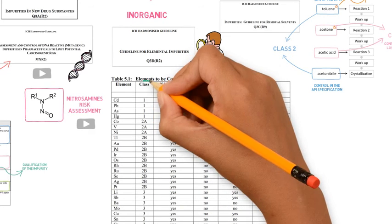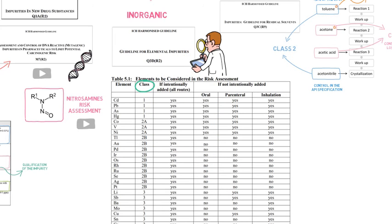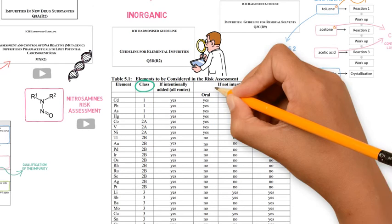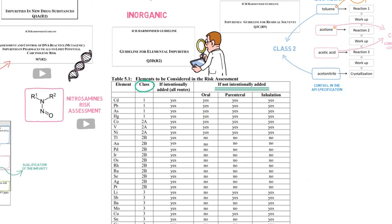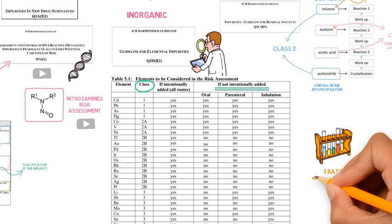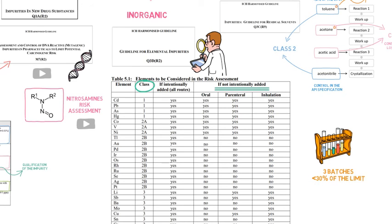there is a classification for these impurities, which will determine if they need to be considered even if they are not intentionally added, depending on the route of exposure as well. In case batch analysis results show levels below 30% of the acceptable limit, there is no need to control these impurities in routine.